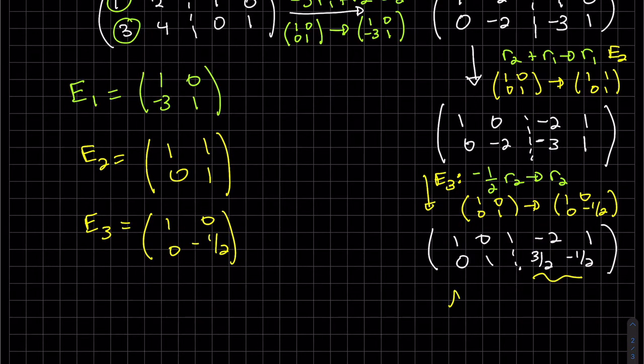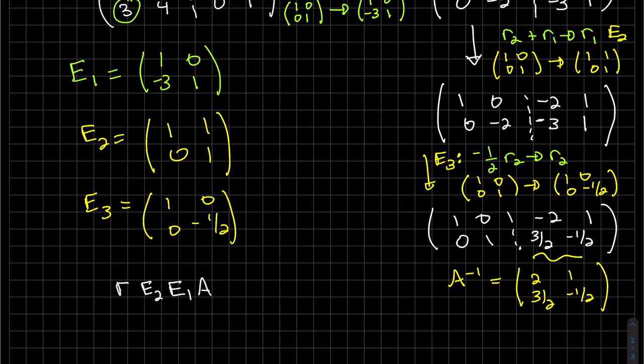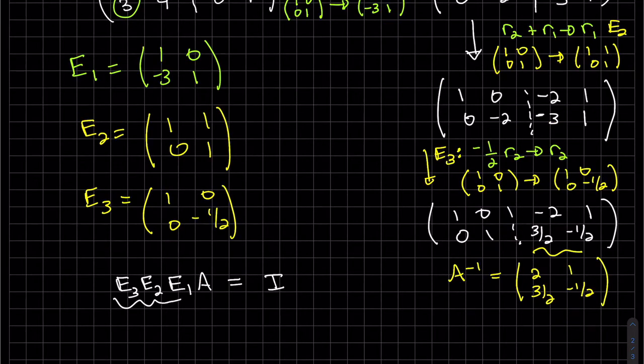So we can see here our A inverse is... So now, just to recall, we have A, we have our first row operation, our second row operation. It took us three of them. We have one, two, three. Turn it to I. There's three steps. Turn this to I. So we can see here A inverse equals E_3, E_2, E_1.